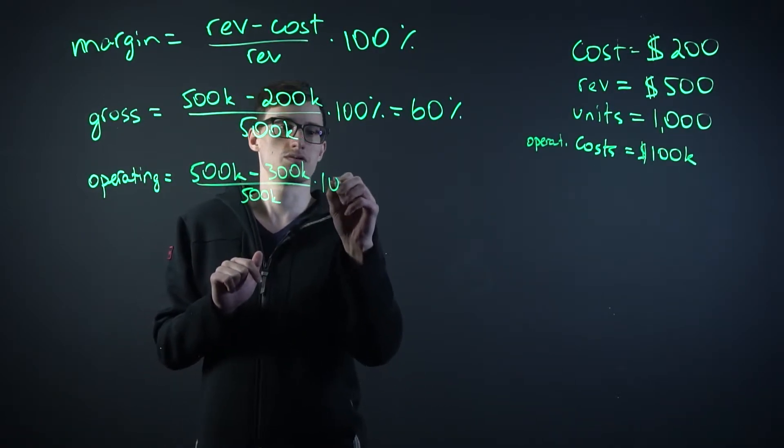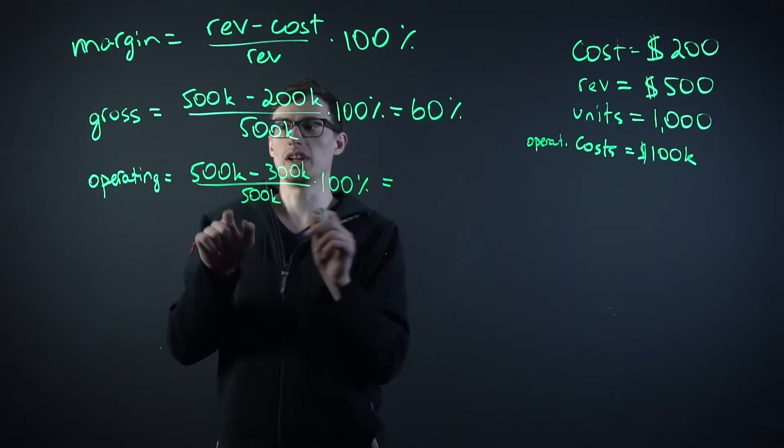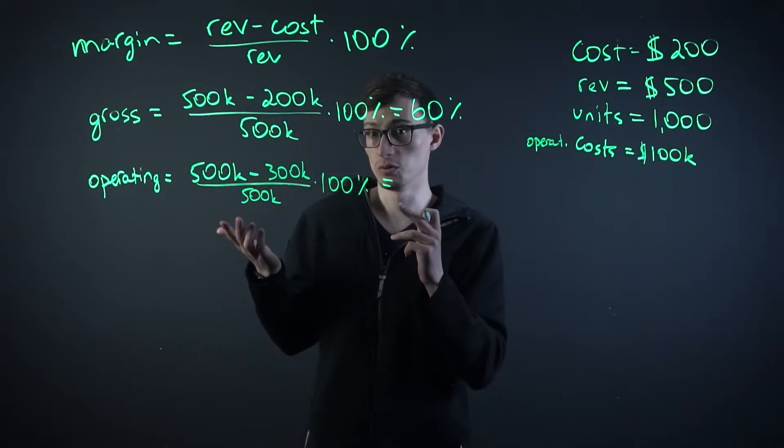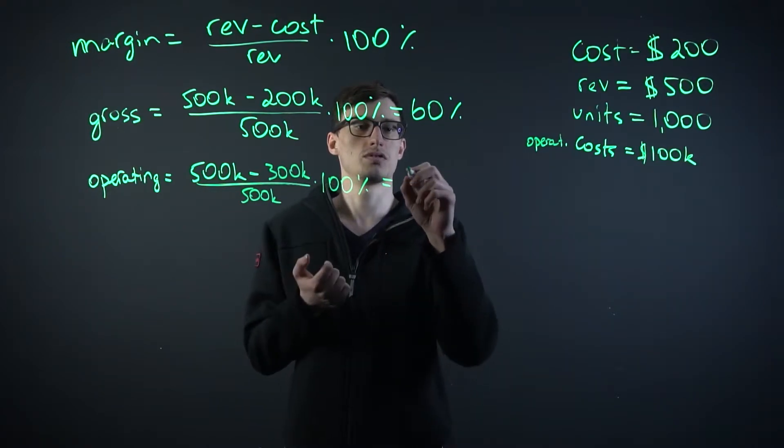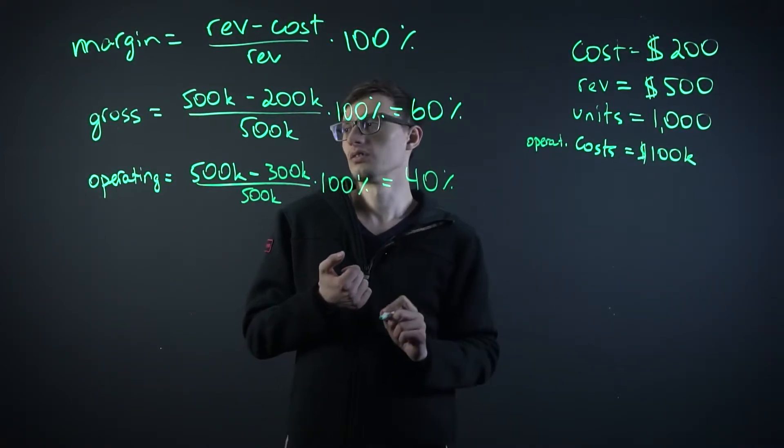Times 100%. What do we get? $500,000 minus $300,000 is $200,000 divided by $500,000. Obviously that's 0.4 times 100%, 40%.